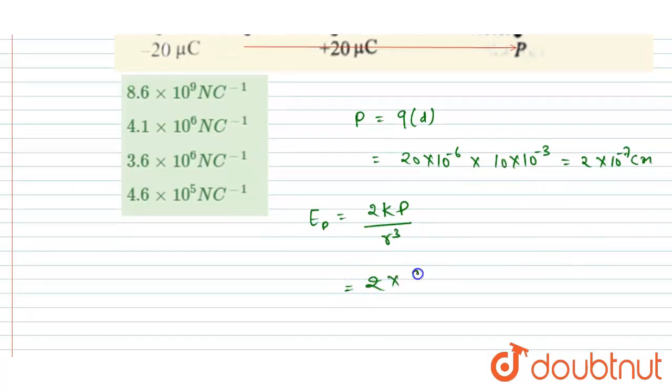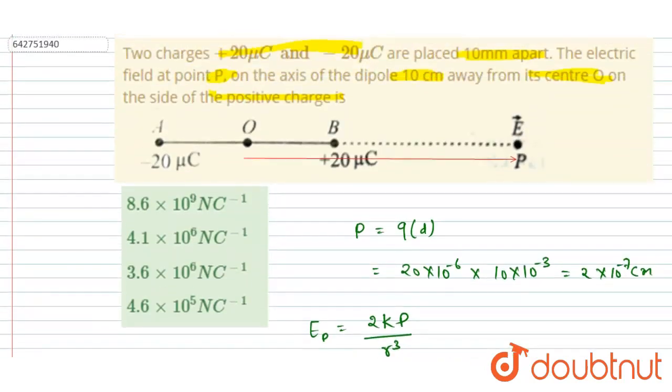Okay, so just put the values now. 2 into k is this, into P. Here we calculated it is 2 into 10 to the power minus 7. In division I will write r cube. r you can see it is 10 centimeter, right? So I will write 0.1 meter